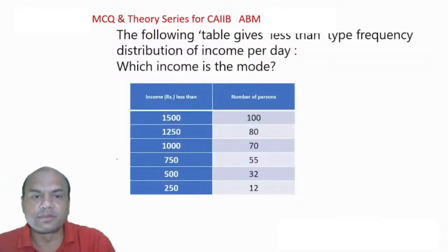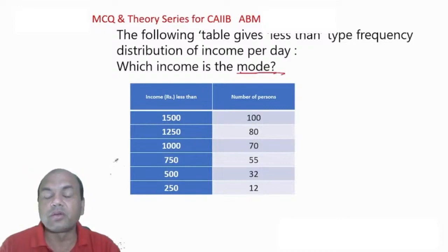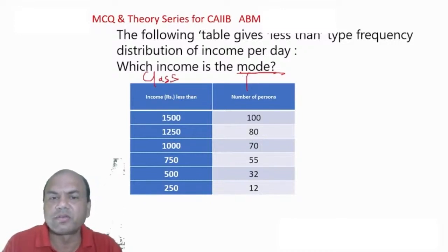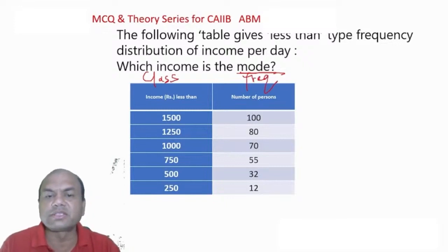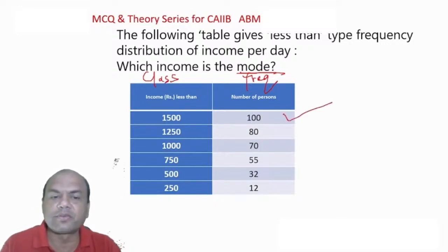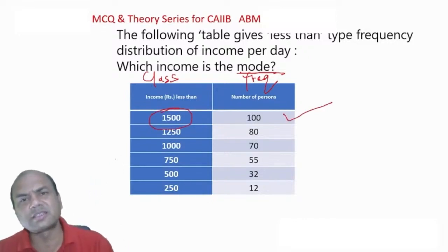The following table is a less-than type frequency distribution of income per day. Which income is the mode? The class is the income range; the frequency is the number of persons with that income. The class with the maximum frequency is the modal class — here maximum frequency corresponds to income 1500, so the modal income is 1500.